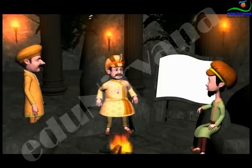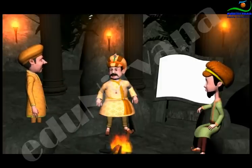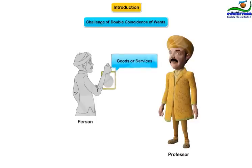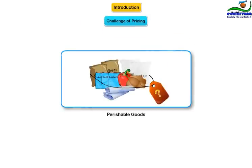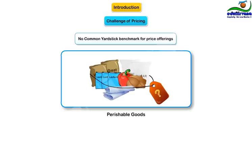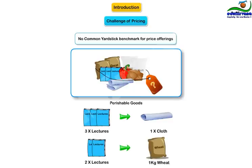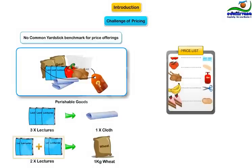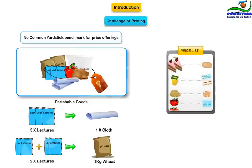The professor went to the king of the island and raised the following concerns. The first challenge is double coincidence of wants: to sell my talent, I have to find someone who has a good or service that I want and who also wants what I have to offer. The second challenge is pricing — there is no common yardstick or benchmark on which to price individual offerings. I may sell three lectures for one cloth and two lectures for a kilogram of wheat; the price itself may vary over time. At any time, there are 190 prices that need to be kept track of, and as the population increases, the numbers will increase geometrically.